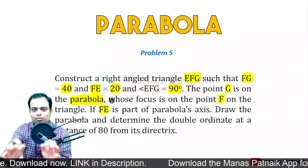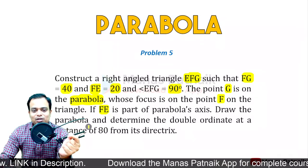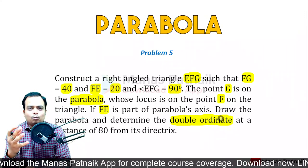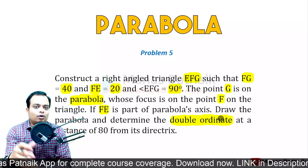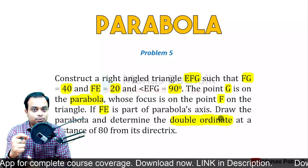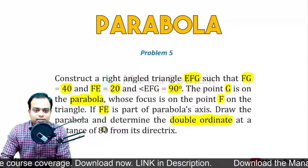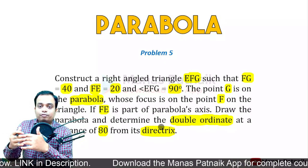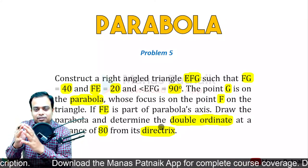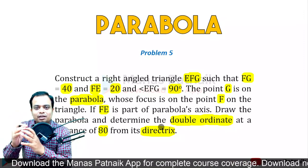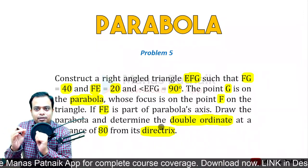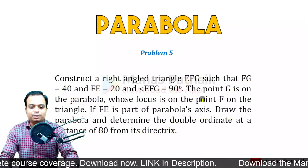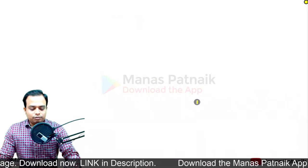Draw the parabola and determine the double ordinate. Some of you might be confused - what exactly is a double ordinate? It is a special chord, not just any chord. We'll find it at a distance of 80 mm from the directrix. After constructing the parabola, we first locate the directrix, then mark the double ordinate and calculate its length AB.